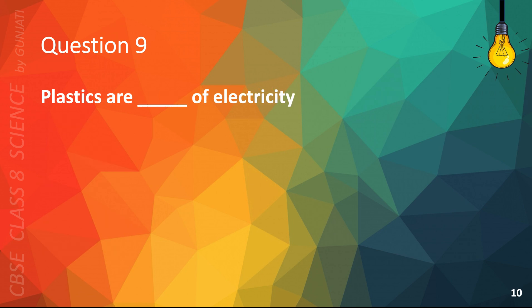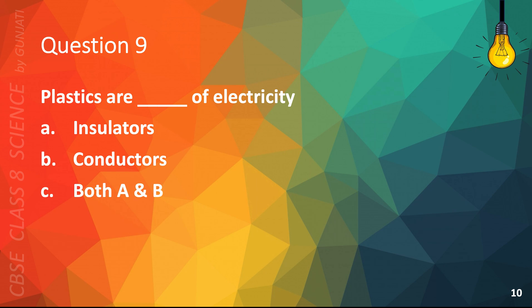Question 9. Plastics are blank of electricity. A. Insulators, B. Conductors, C. Both A and B, or D. None of the above. The correct answer is A. Insulators.